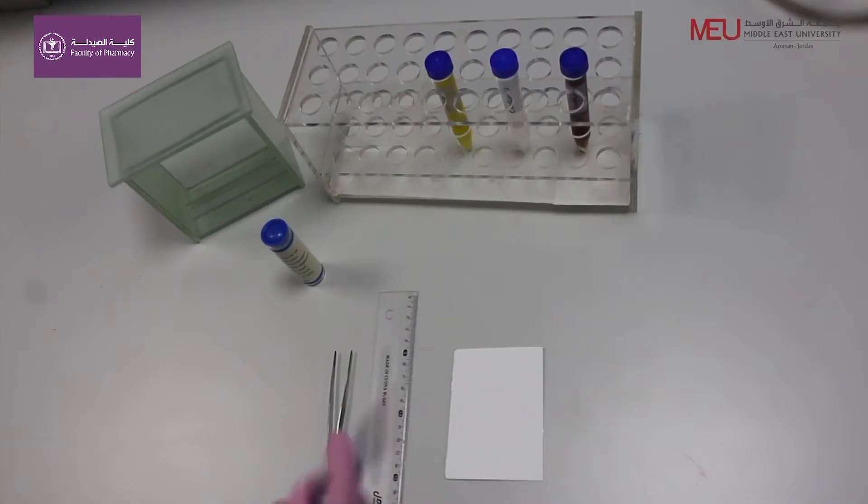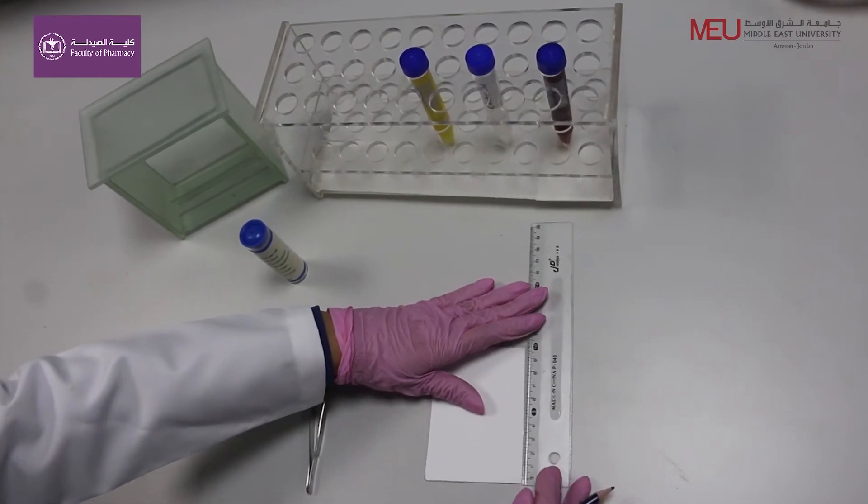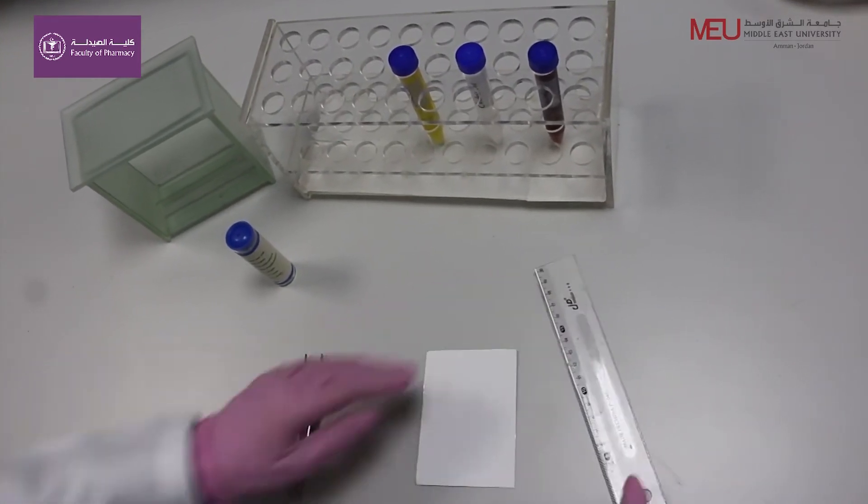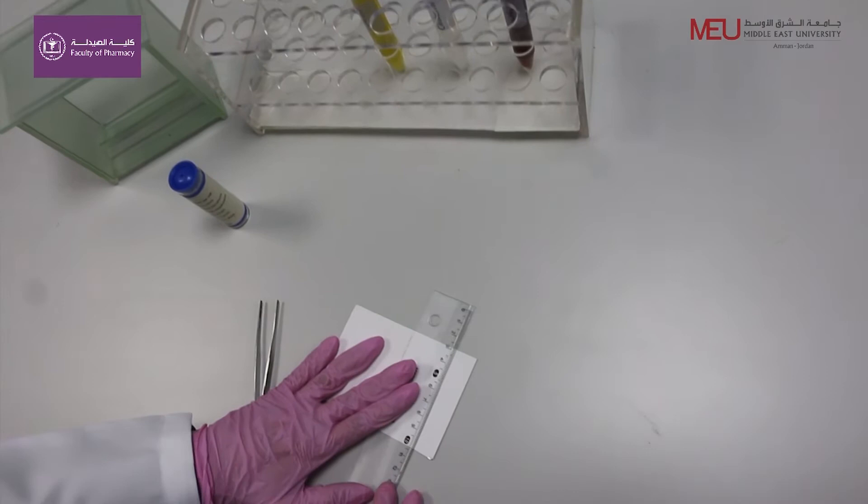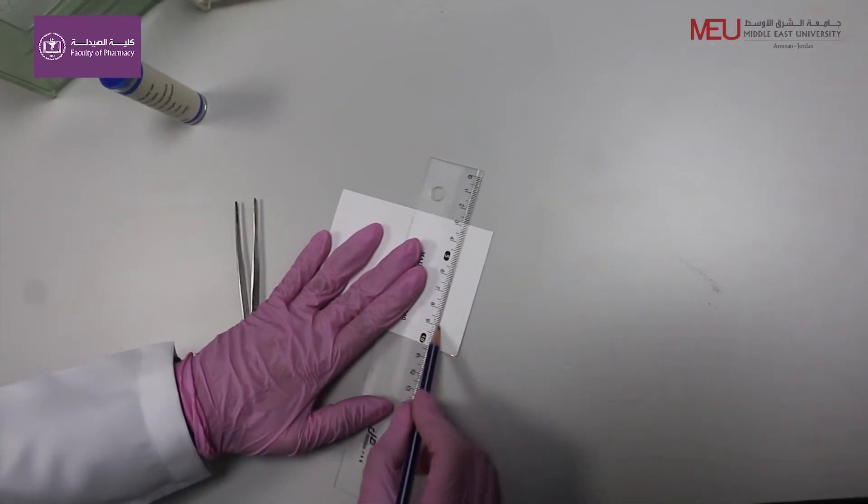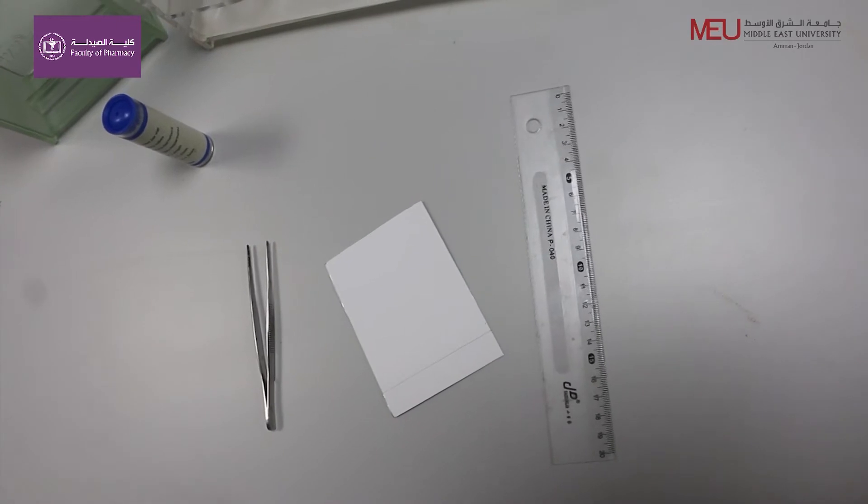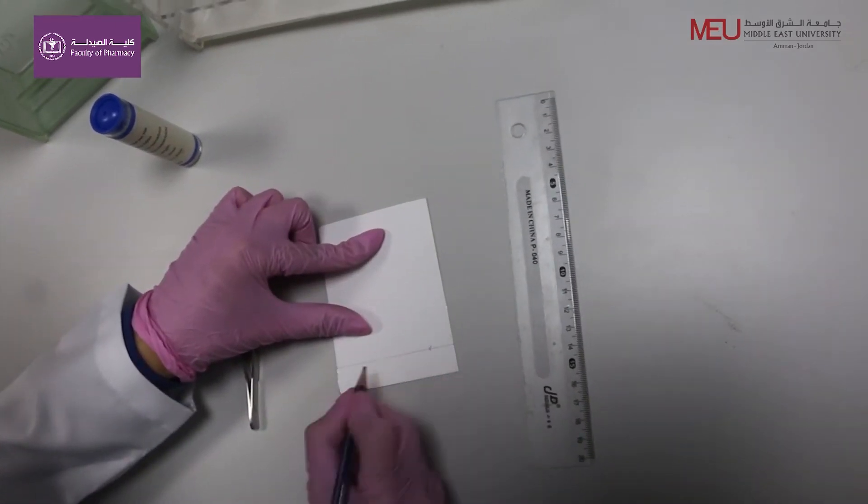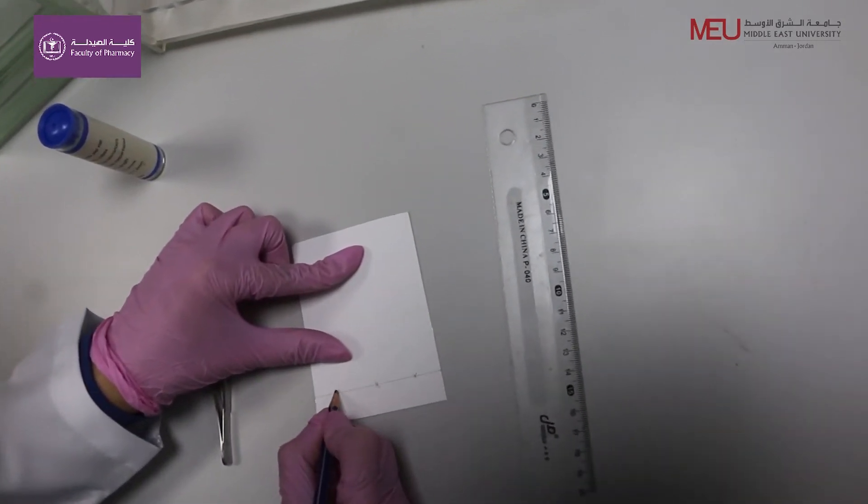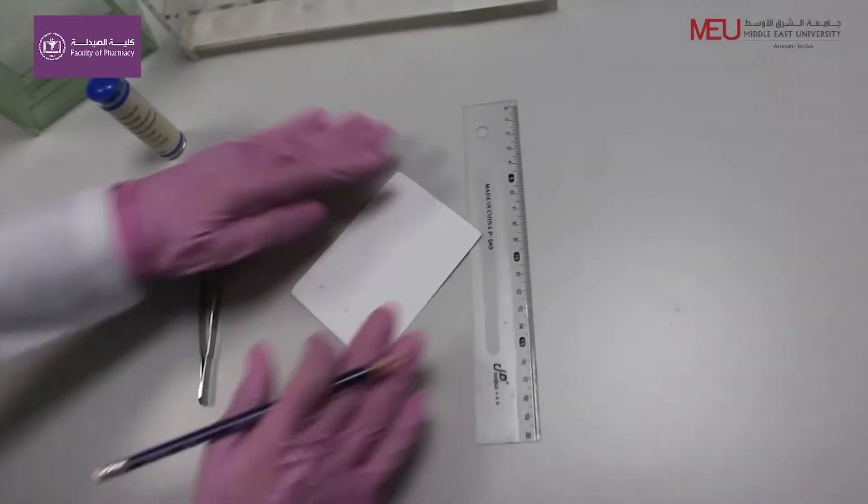Using a soft pencil, gently draw a baseline one and a half centimeters from the bottom of the plate. Do not scratch or damage the silica surface. Lightly mark three positions at least one centimeter away from the edge of the plate.